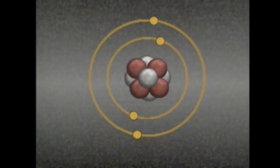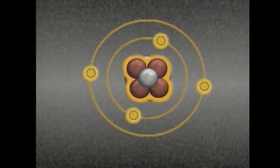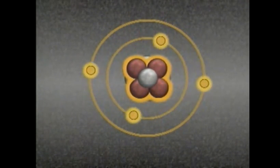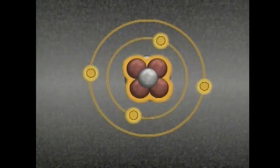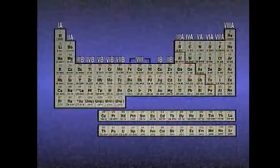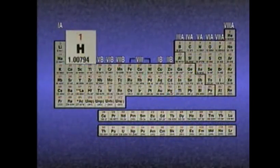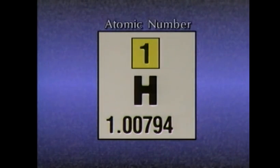For example, this atom has 4 protons and 4 electrons. Because the positive and negative charges balance each other, the atom is electrically neutral. Elements are categorized by the number of protons in their atoms. This number is called the element's atomic number. Information about elements can be found in a periodic table, like this one.